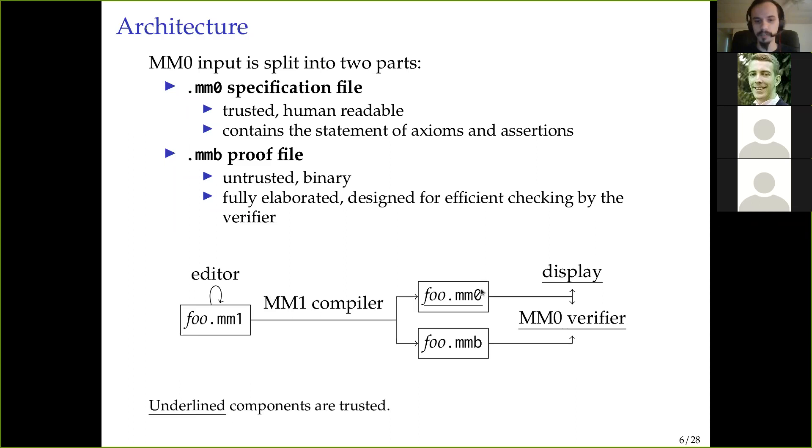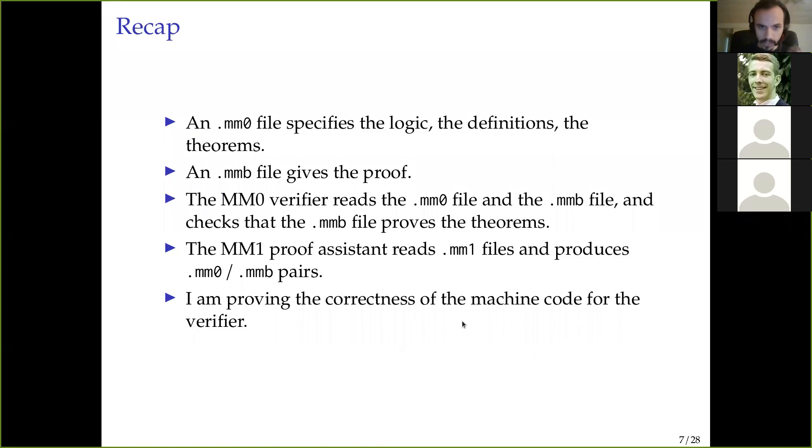The input to the MM0 verifier is actually split into two parts, and these go according to whether they are trusted inputs or not. The trusted input is the MM0 file. This is a specification file. It's human-readable, and contains the statement of axioms and assertions. The MMB file is this proof file. This is untrusted. It is not in a human-readable format. It is designed for efficient checking by the verifier.